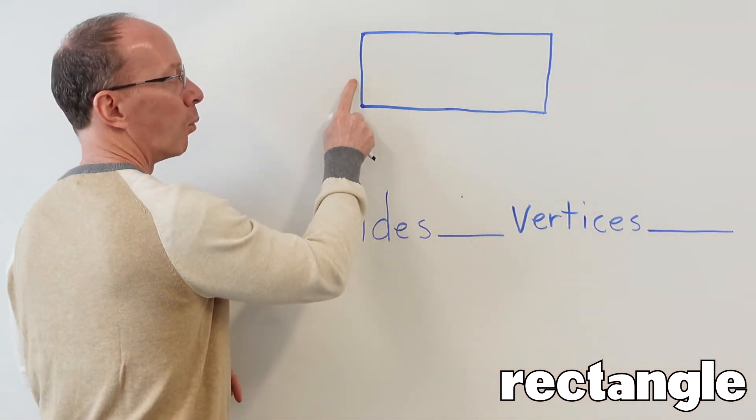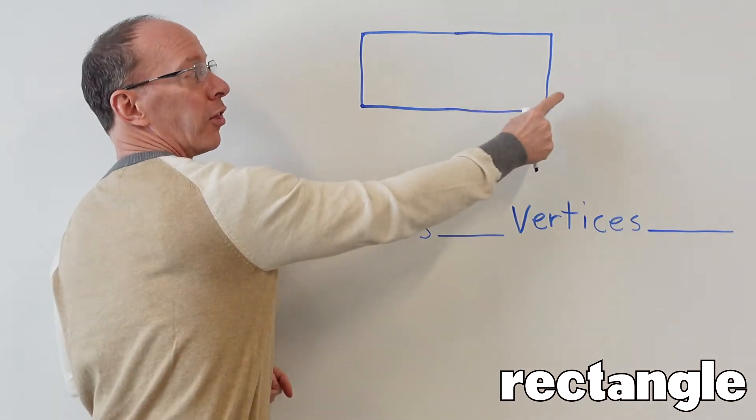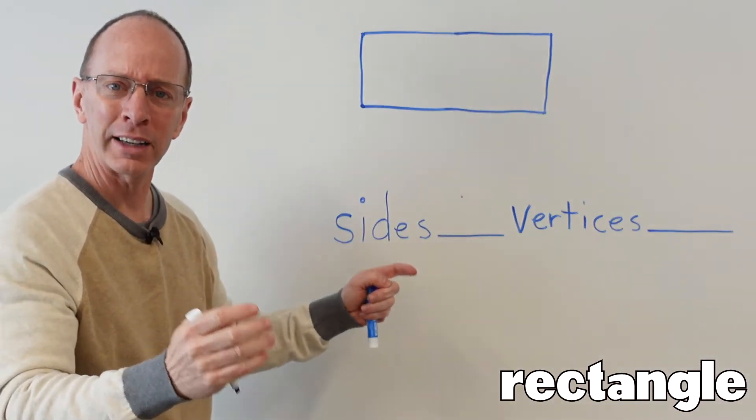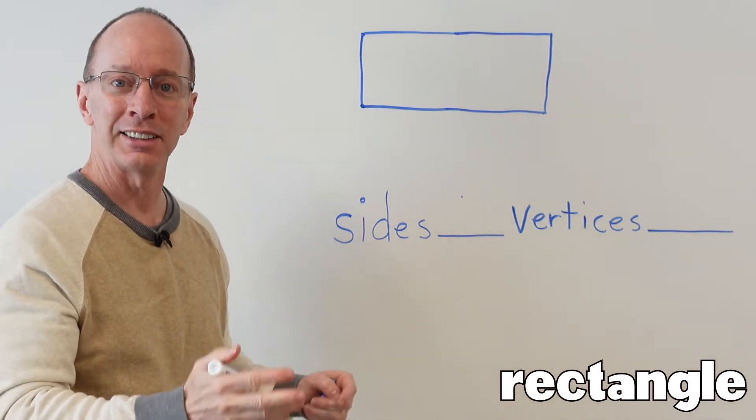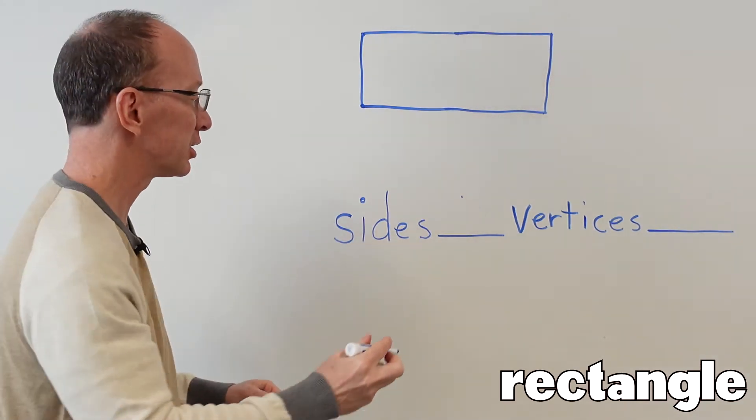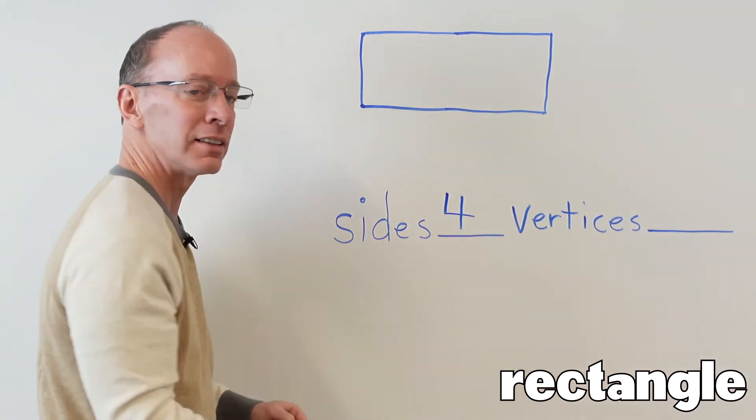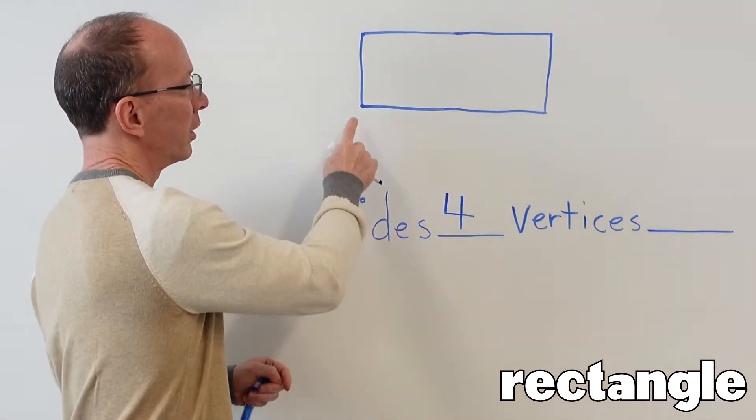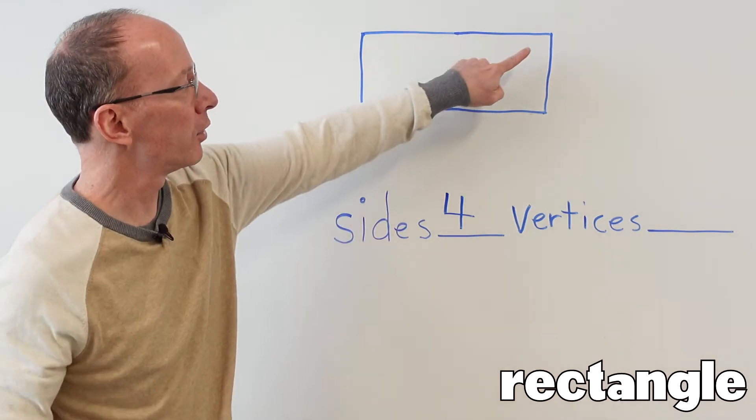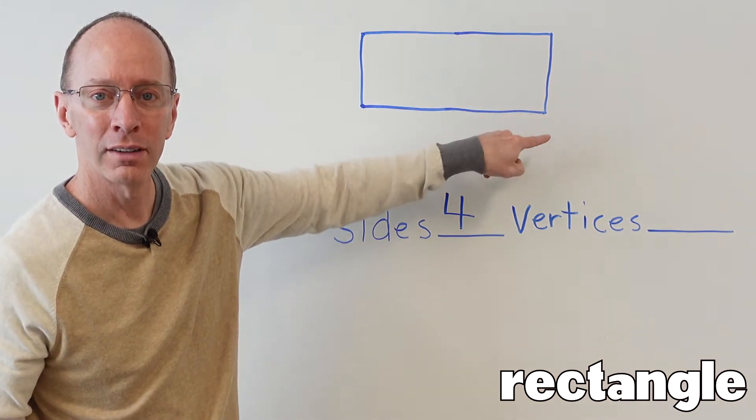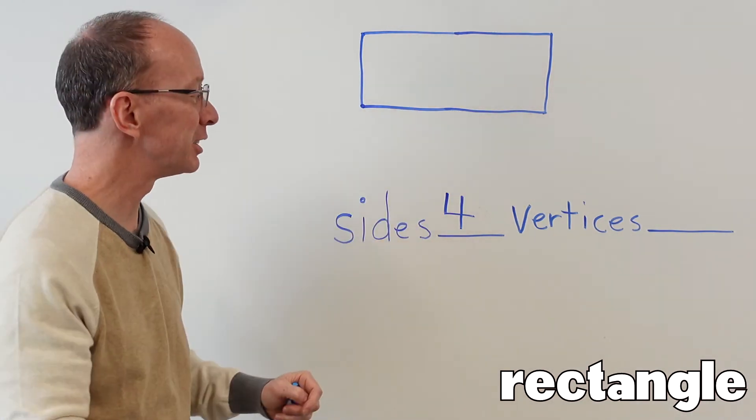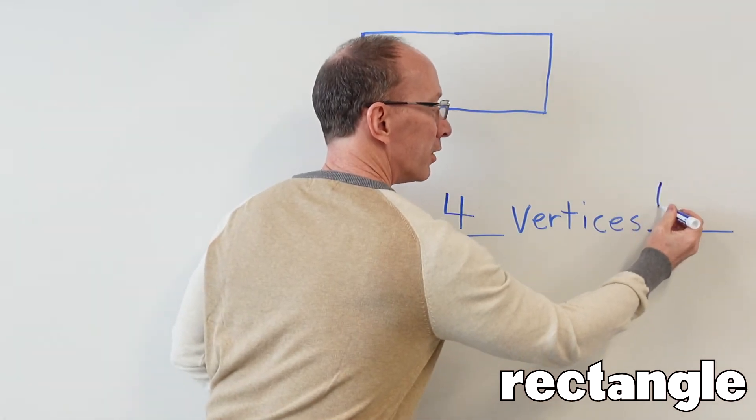So we have one, two, three, four. A rectangle has four sides, the same amount of sides as a square. So let's put four right there. Let's count the vertices. We have one, two, three, four. Same amount of vertices. We have four vertices.